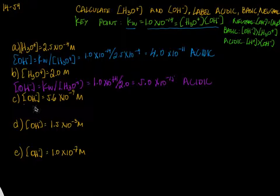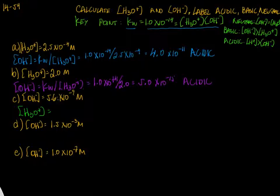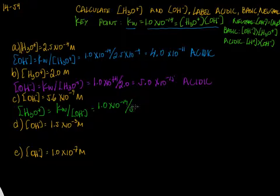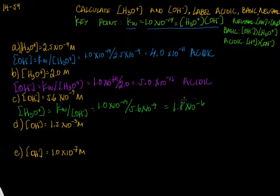This next one is a little different — we're given [OH-] = 5.6×10⁻⁹ M. Now we solve for H3O+: [H3O+] = Kw / [OH-] = 1.0×10⁻¹⁴ / 5.6×10⁻⁹, which gives 1.8×10⁻⁶. That's a larger number, so H3O+ is more concentrated — we label this solution as acidic.